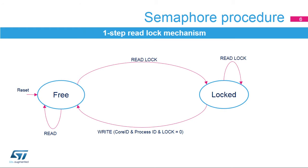In the one-step read-lock procedure, a free semaphore will be locked by reading the semaphore's read-lock register. The core ID used during the read will be stored in the semaphore during the read cycle. When the semaphore core ID value read by the CPU matches the one from the CPU and the process ID equals 0x0000, the semaphore is locked by the CPU. In the one-step read-lock procedure, there is no process ID. The process ID, when locked by a one-step read-lock procedure, will read 0x0000.